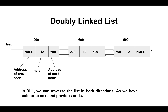The last node has no next node, so its next pointer is null, and it contains the address of the previous node. In a doubly linked list we have the functionality to traverse in both forward and backward directions. Each node has three parts: the address of the previous node, the data, and the address of the next node.